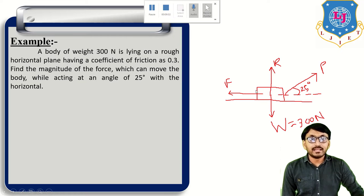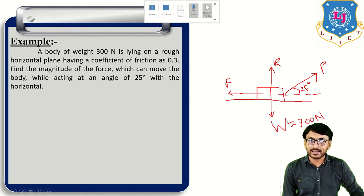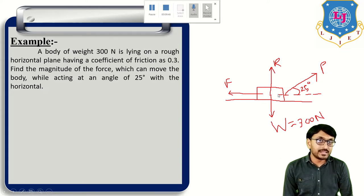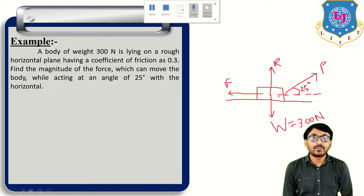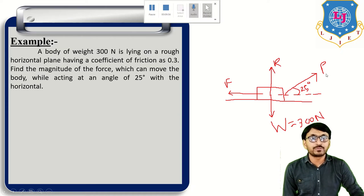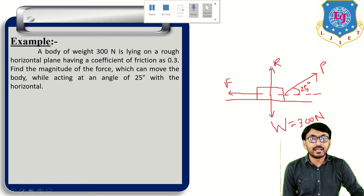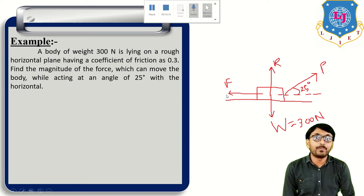In this example there is a block of weight 300 Newton — weight always acts in the downward direction. We have to apply some external force, denoted by P, at 25 degrees with the horizontal. In the vertical direction upward there is a normal reaction R, and F is the force of friction, which acts opposite to the external applied force.